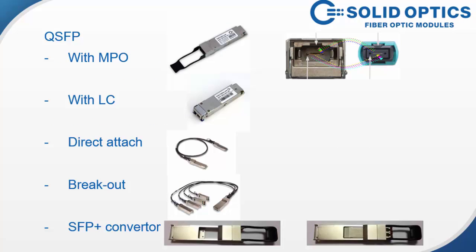There are five different types of QSFP. The most simple one has an MPO connector. Then we have them with duplex LC connectors as well. You have direct attach cables in copper and also in fiber. You have the breakout version, which is basically a QSFP-to-SFP+. And you have an SFP+ converter, which is a 40 gig or 100 gig to 10 gig SFP+, so you can plug an SFP+ in there and have a 10 gig port instead of a 40 gig port.